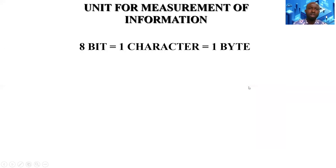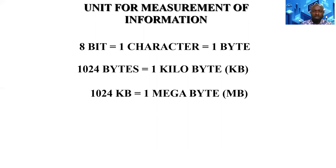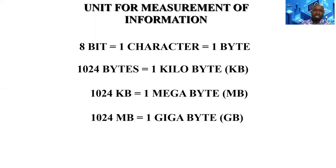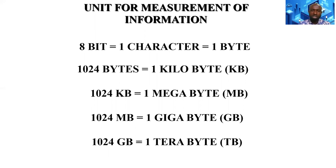Now let's look at the units for measurement of information. Eight bits give us one byte. 1024 bytes give us one kilobyte. 1024 kilobytes give us one megabyte. 1024 megabytes give us one gigabyte. And 1024 gigabytes give us one terabyte. The smallest unit of measurement for a computer system is the byte, and eight bits give us one byte.